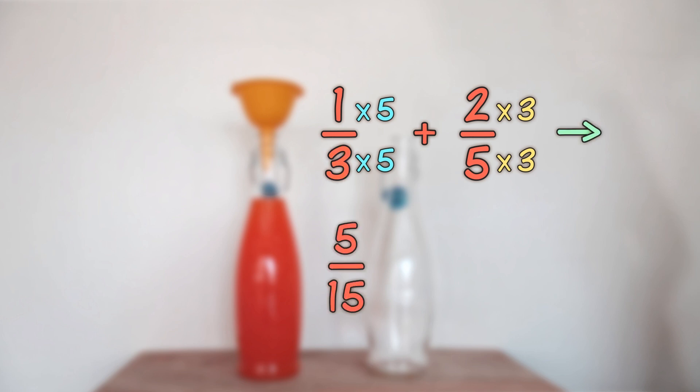You now have five-fifteenths plus six-fifteenths, which means that eleven-fifteenths of your bottle is full.